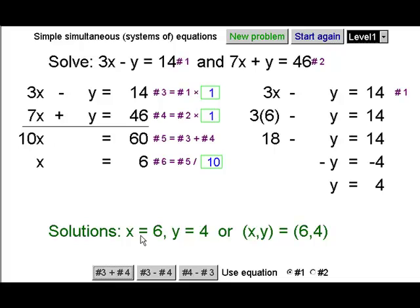And here's our solution. x is 6 and y is 4. Sometimes it's written as if they're coordinates. x comma y is 6 comma 4.